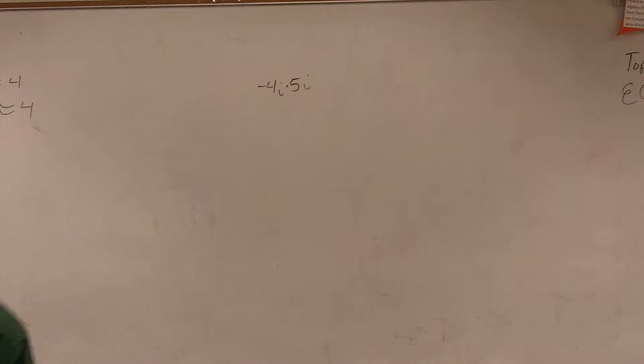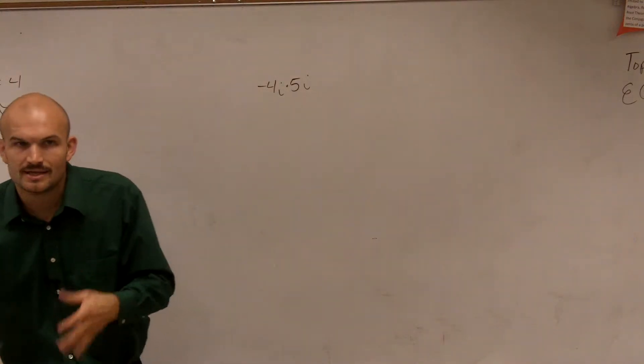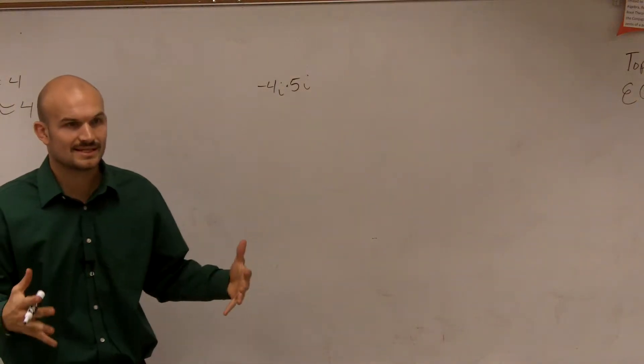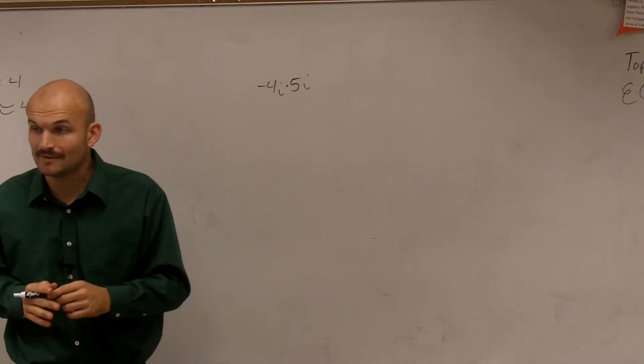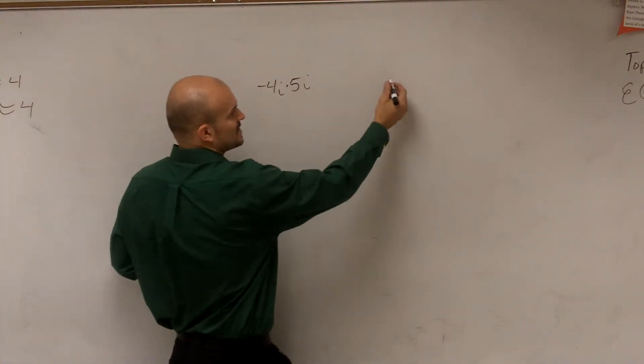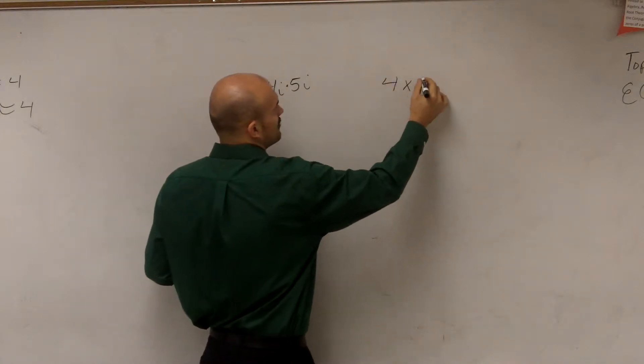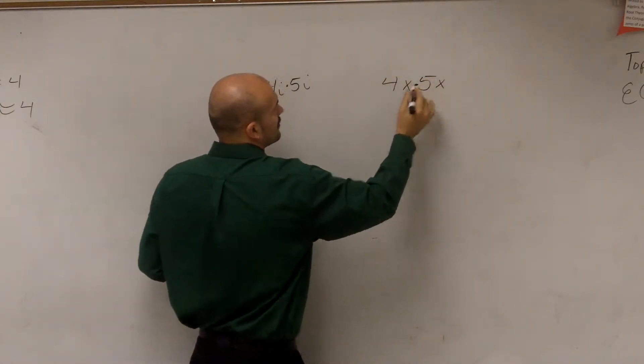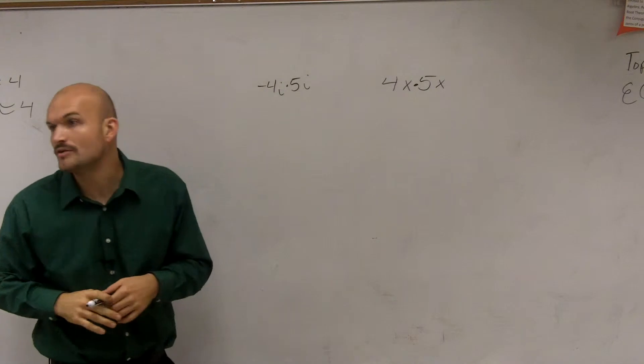OK, so for this problem, it says negative 4i times 5i. And the main important thing I want to relate to this is when we're multiplying complex numbers or imaginary numbers, it's very similar to multiplying our variables with other variables.